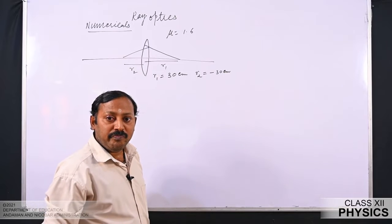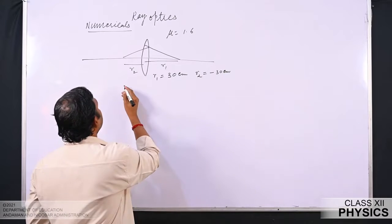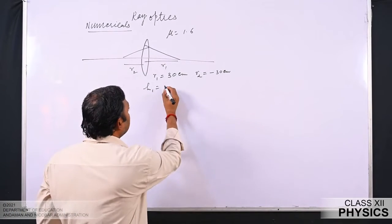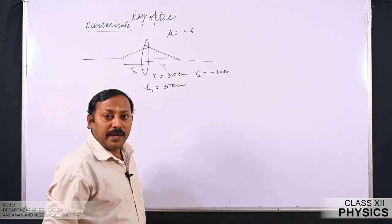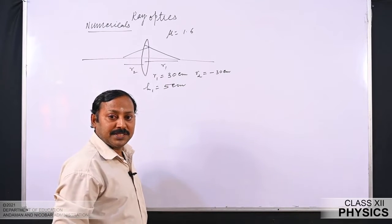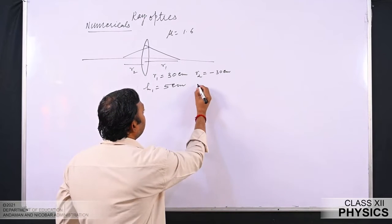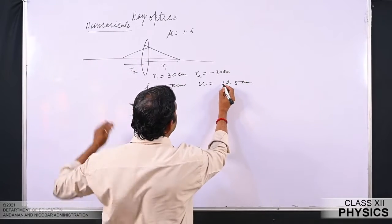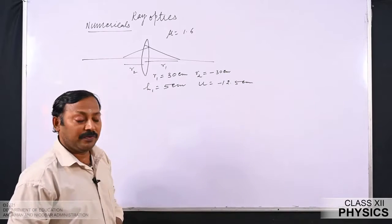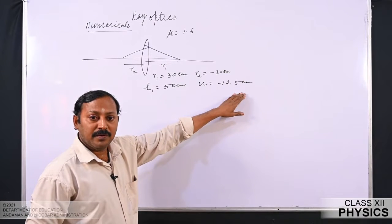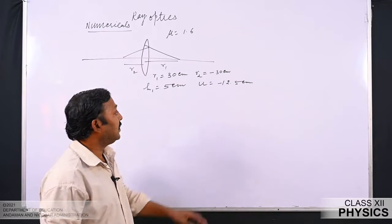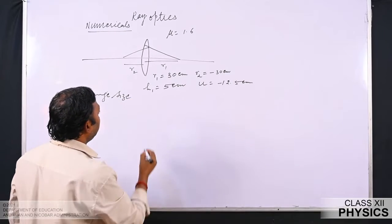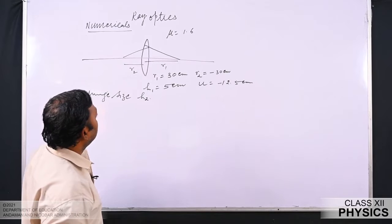The height of the object is H1 equal to 5 centimeter, and it is placed at a distance of 12.5 centimeter from the lens. Since it lies towards the negative side, U equal to minus 12.5 centimeter. We need to find the image size H2.